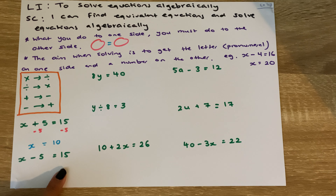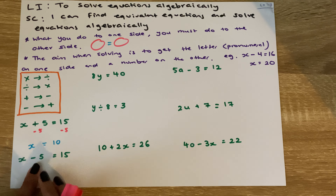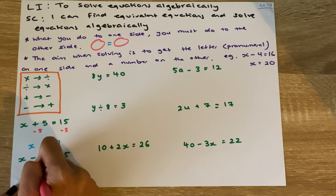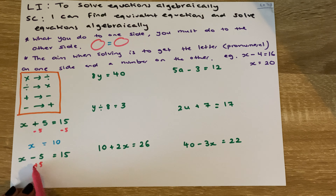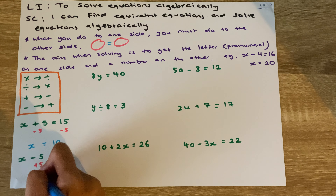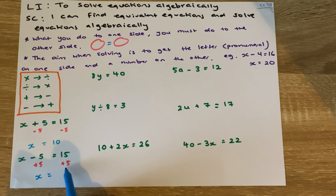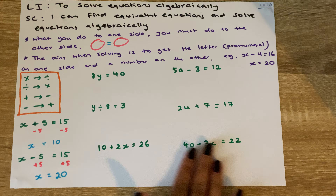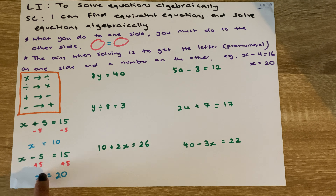Here I've got x take away 5 equals 15. We want to get x by itself and there's a minus 5. To get rid of it, we do the opposite — the opposite of subtracting is adding. So we add 5 to both sides. Take away 5 plus 5 cancels out, leaving just x. And 15 plus 5 is 20, so x equals 20. We can verify: 20 take away 5 is in fact 15, so the answer is correct.